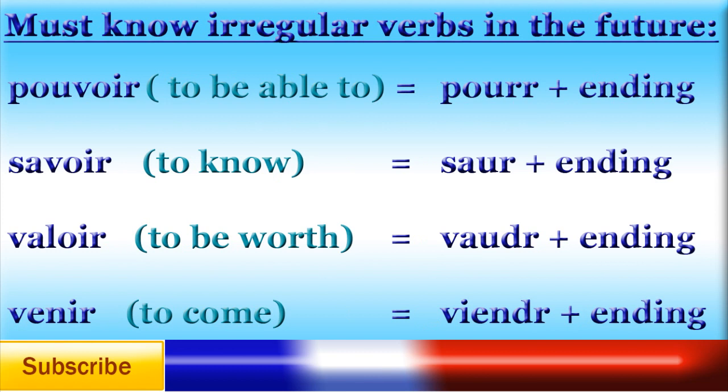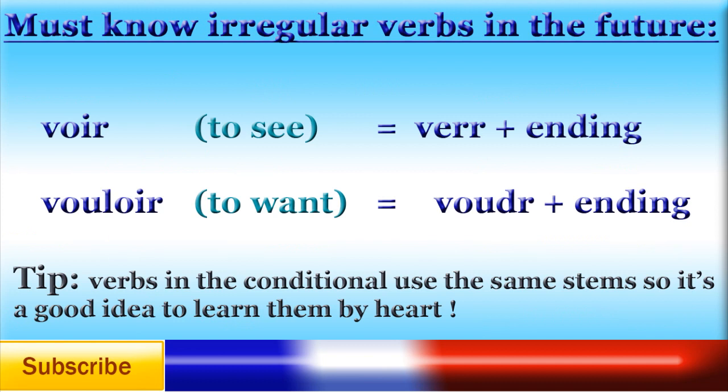The stem for pouvoir in the future is pourr-, for savoir it is saur-, for valoir it is vaudr-, for venir it is viendr-, for voir it is verr-, and for vouloir it is voudr-. Verbs in the conditional use the same stems, so it's a good idea to learn them off by heart.